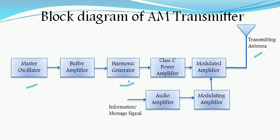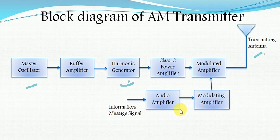Now let us see the power amplifier used for the message signal. The information or message signal is generated from the information source and passed through a transducer, which generates an electrical signal of low strength. To boost this signal, it is passed through multiple stages of amplification, including the audio amplifier. It is then passed through the modulating amplifier, which is a Class B push-pull amplifier used to generate a high power signal.